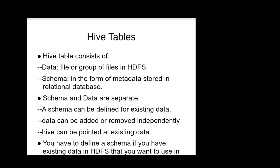Hive tables consist of two parts: first, the data — a file or group of files in HDFS; second, the schema, stored as metadata in a relational database. Schema and data are separate; there is no tight relation between them. A schema can be defined for existing data, data can be added or removed independently, and Hive can be pointed at existing data. You must define a schema for existing HDFS data that you want to use in Hive.